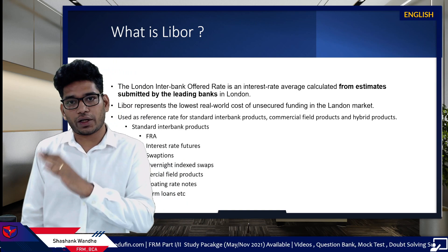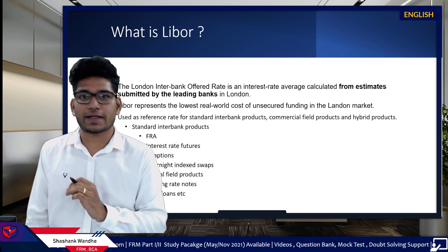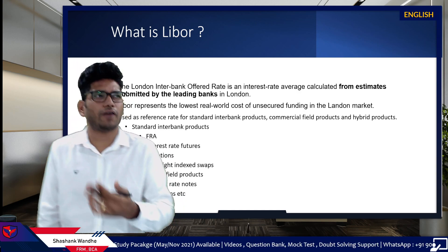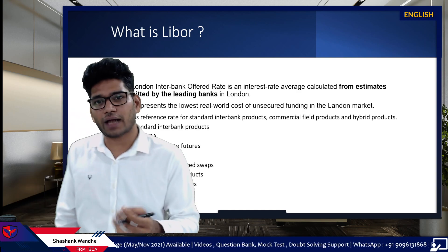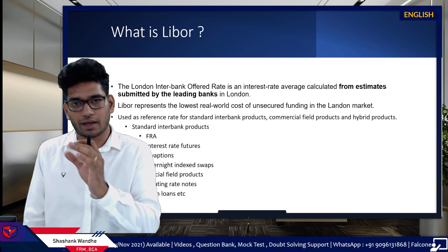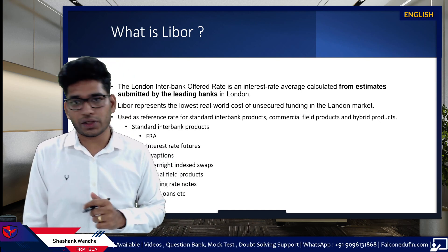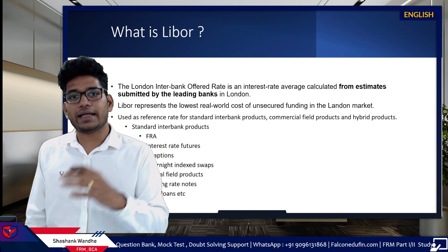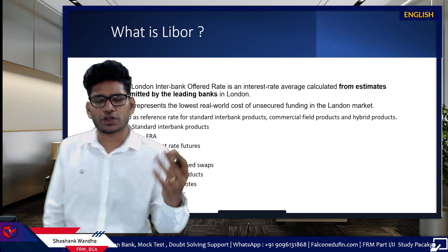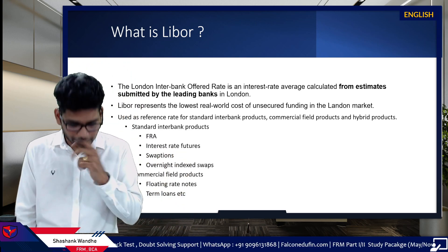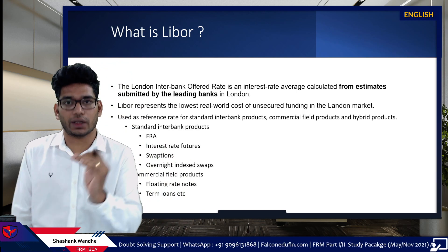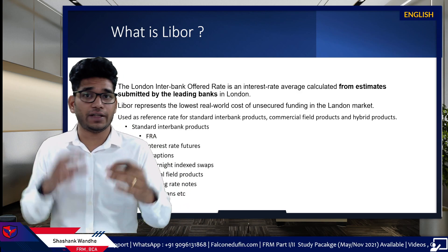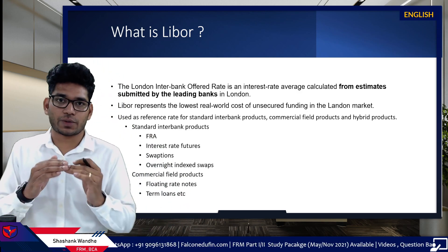Before LIBOR, treasury rates were used as the reference rate for the risk-free rate — obviously because these are government-issued securities, which are generally risk-free. But the problem with the treasury rate is that it is considered understated. Because there are many incentives for institutions to invest in treasuries, the rate is quoted lower due to tax benefits — the government provides tax benefits and therefore pays a lesser interest rate. That's why treasury rates are considered understated.